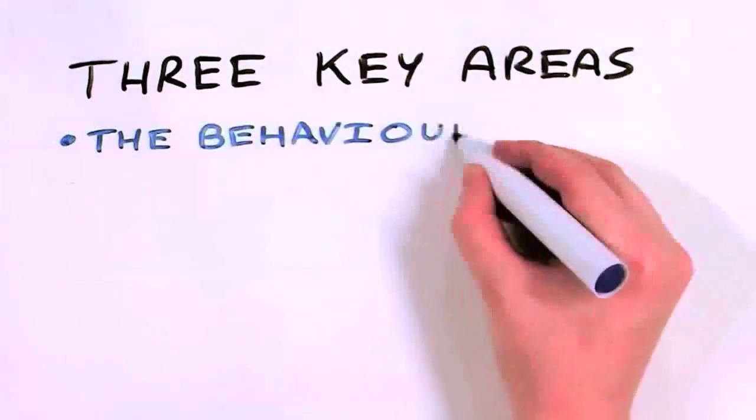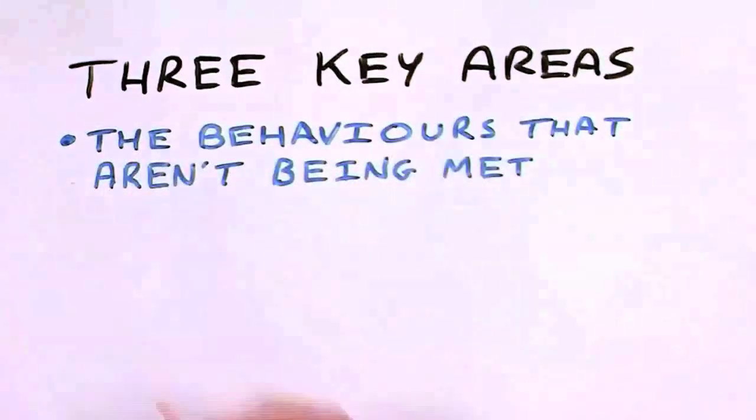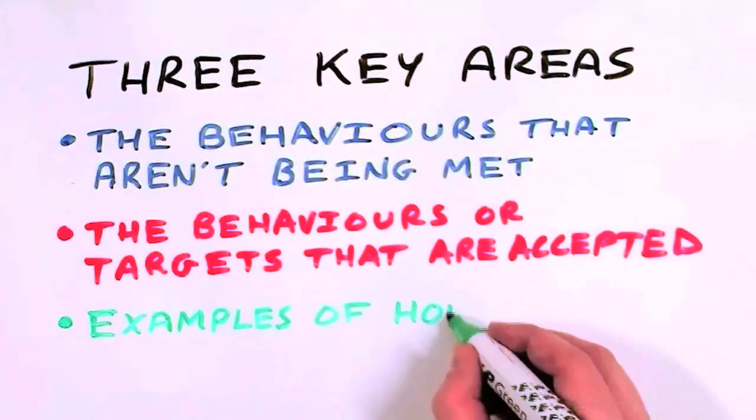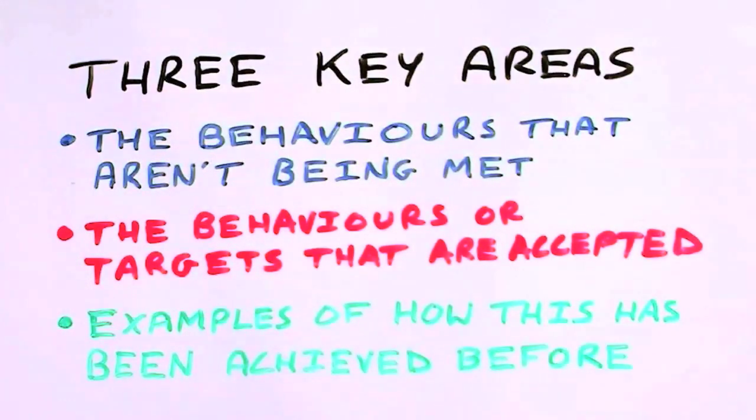Firstly, the behaviors or targets that are not being met. Secondly, the behaviors or targets that are accepted. And thirdly, examples of how this has been achieved before by someone else.